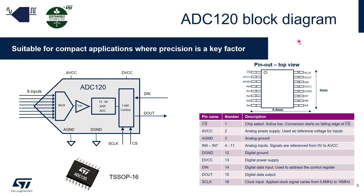On this slide you can see the block diagram. The device has two power supplies: one for the analog block, AVCC, and one for the digital block, DVCC. On the left, you can see the 8 inputs connected to a multiplexer, where you select which channel to measure. Then the signal goes through the 12-bit ADC converter, which is based on the successive approximation register, SAR, with an internal track and hold cell.